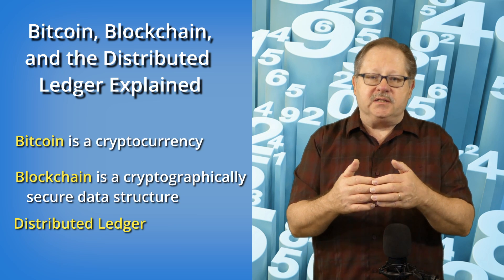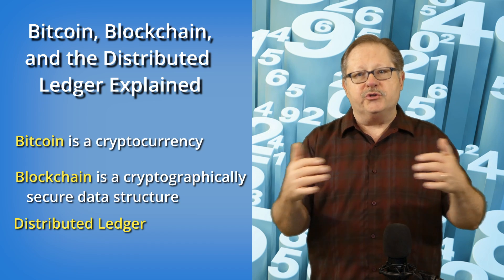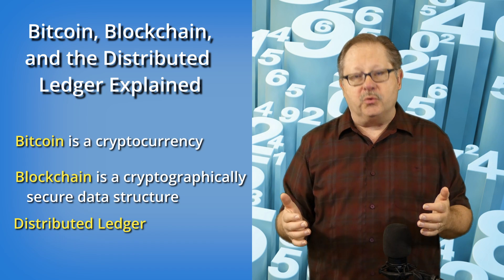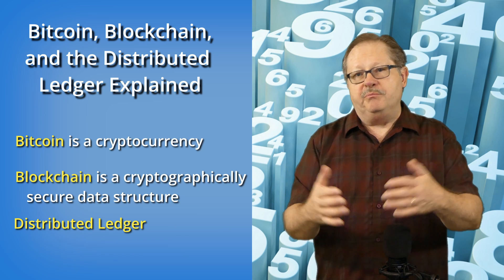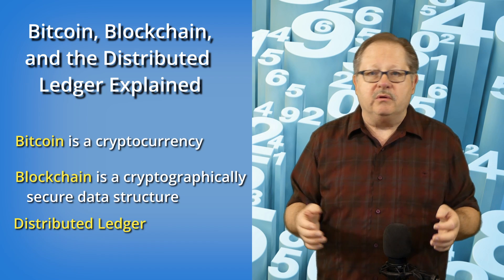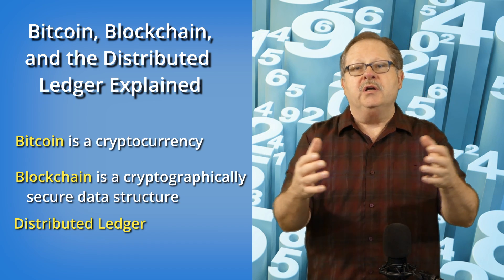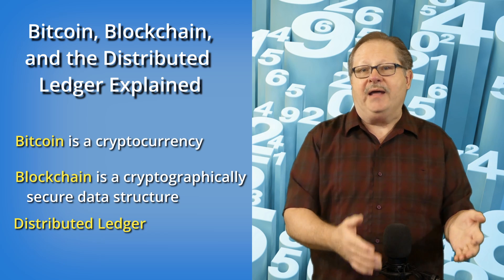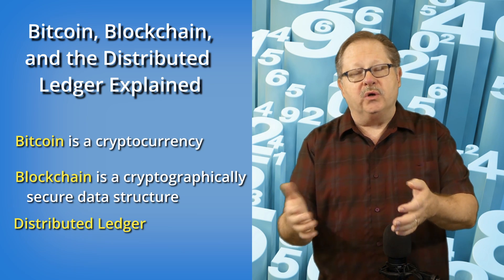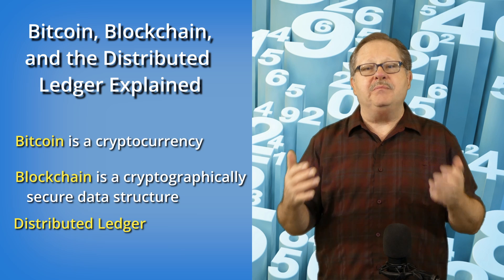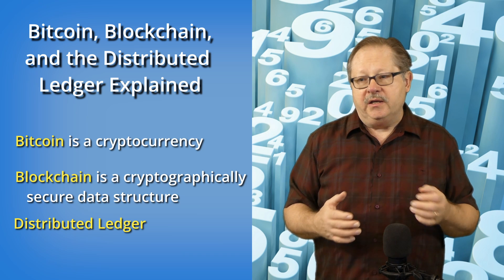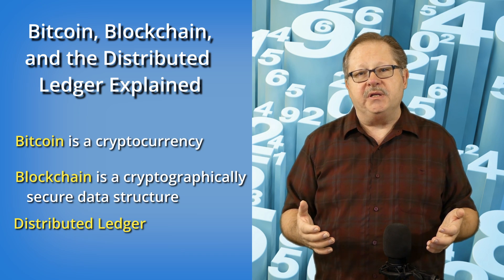What happens in a blockchain is various computers around the network run nodes. If it's in a business, the people who run nodes are pre-selected by the admin of the blockchain. In Bitcoin, it's a public blockchain so anybody can run a node.